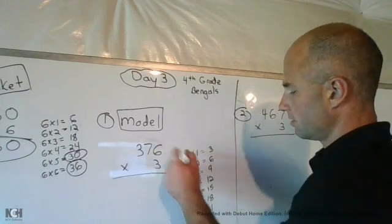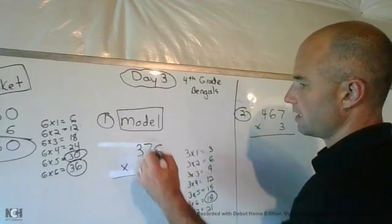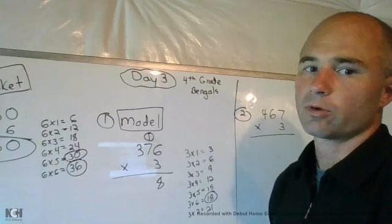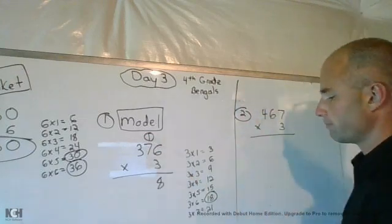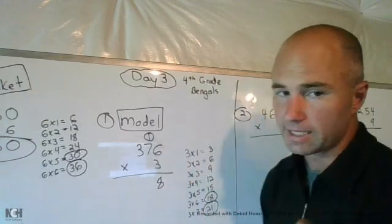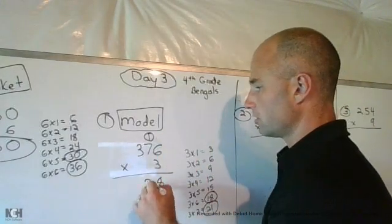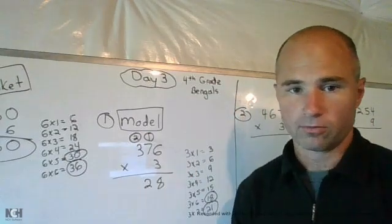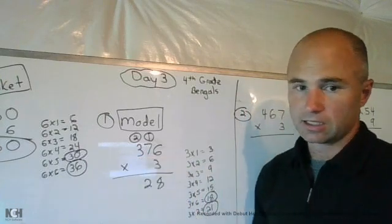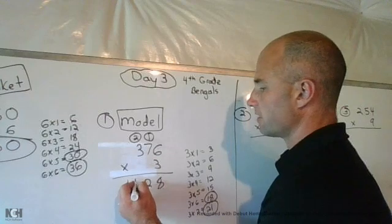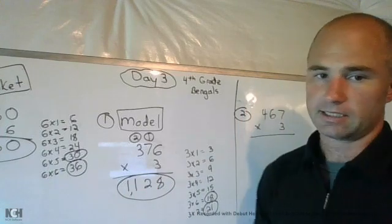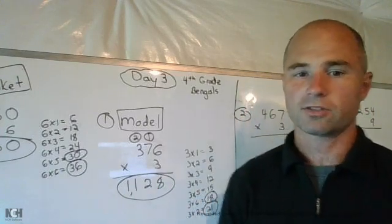So, let's start off with three times six here, giving me eighteen. I leave the eight, I carry the one. I have to regroup that one of eighteen. Technically it's ten, but we look at it as just one. Then we do three times seven, which gives you twenty-one, but I can't forget to add that one there to give me twenty-two. Carry the two of the twenty-two. Then I do three times three, which makes nine, plus two, which gives you eleven. Giving me an answer of one thousand, one hundred twenty-eight. Awesome job.